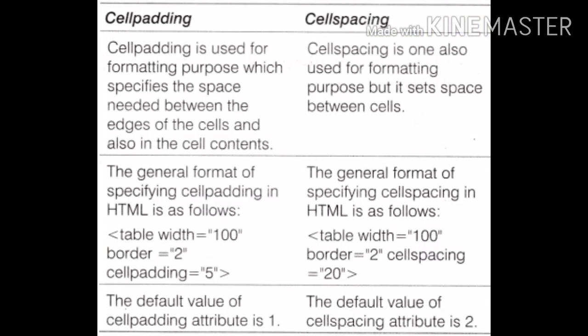Now, the difference between cell padding and cell spacing. Cell padding is used for formatting purposes which specifies the space needed between the edges of the cells and also the cell contents. Whereas cell spacing is also used for formatting purposes but it sets the space between cells.